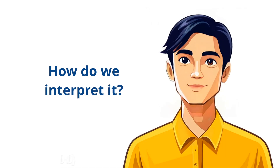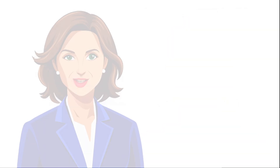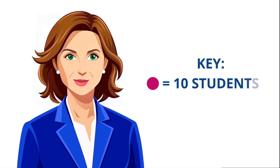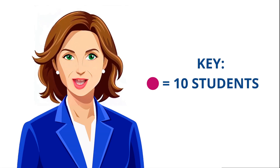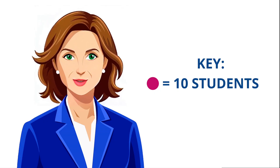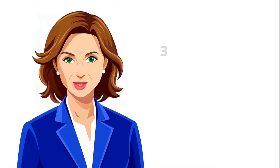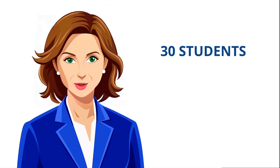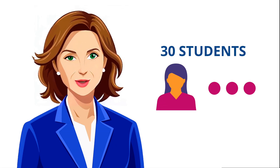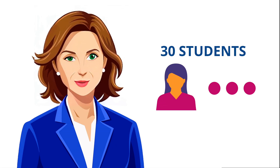And how do we interpret it? Each symbol in a pictograph represents a certain quantity. The key, usually found at the bottom, tells you what each symbol stands for. For example, if one icon represents 10 students, three icons would mean 30 students in a particular club.